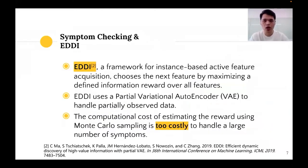ADI, a framework for instance-based active feature acquisition, raises an alternative for symptom checking. It chooses the next feature by maximizing a defined information reward over all features. To deal with the situation in which an agent only knows partial information about patients during the inquiring process, ADI uses a partial variational autoencoder, or VAE for short. However, its computational cost of estimating the reward using Monte Carlo sampling is too costly to handle a large number of symptoms.